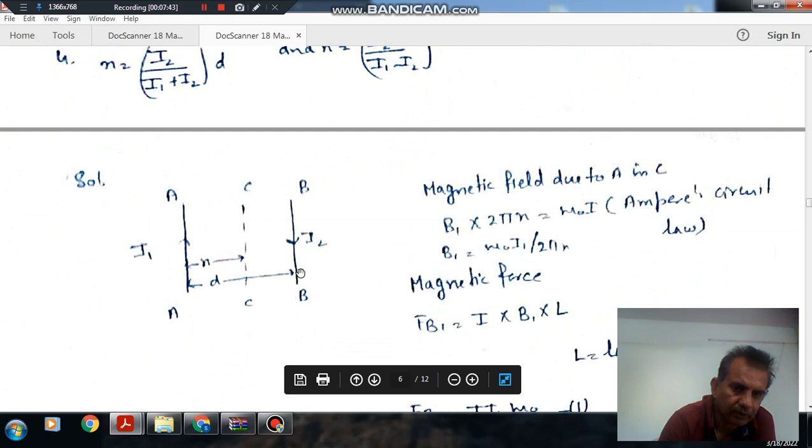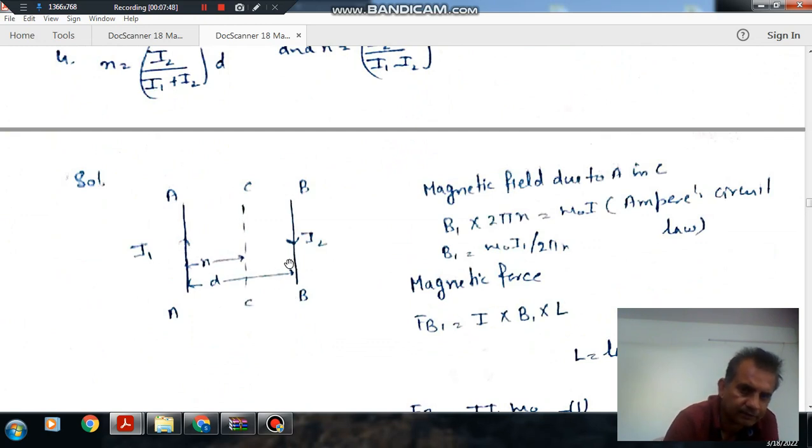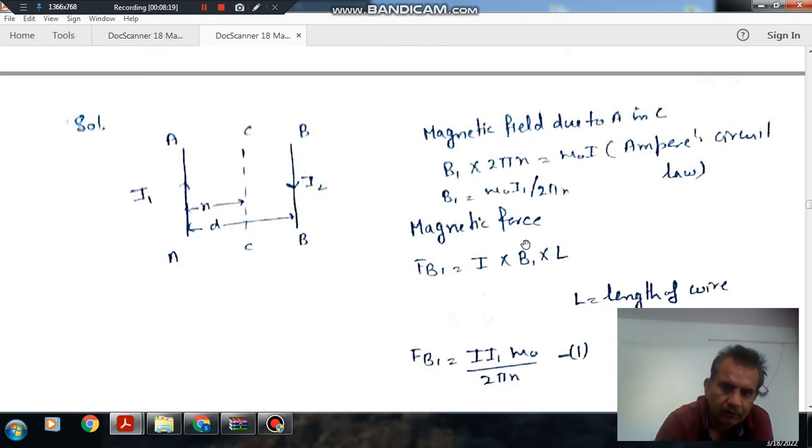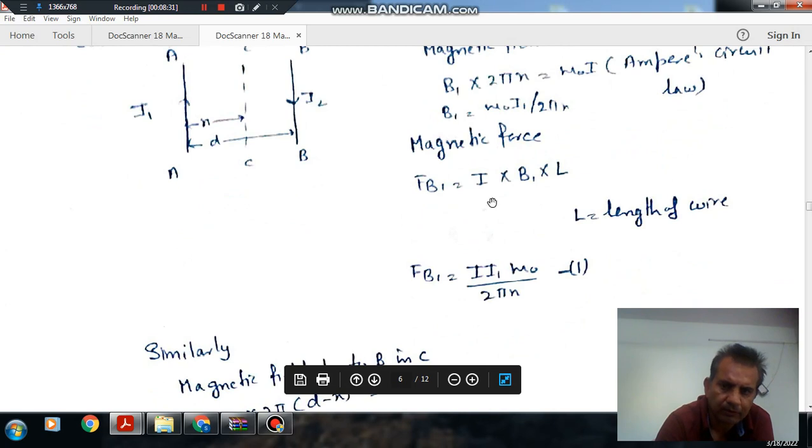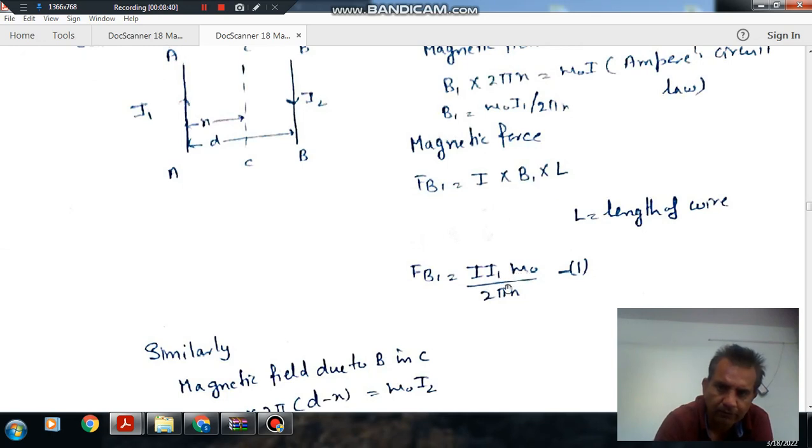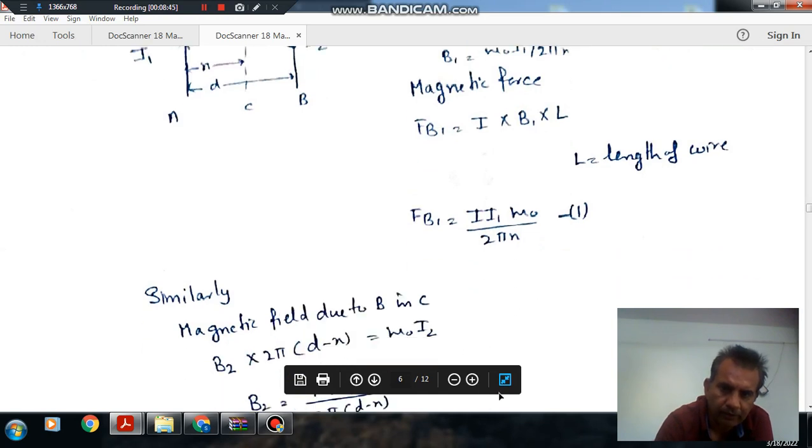These are the two wires, I_1 and I_2, and this is the third wire at a distance X from I_1. The magnetic field at C due to I_1 is given by B_1 = μ_0I_1/(2πX). The magnetic force is F_1 = I×L×B_1. Putting the value of B_1, we get F_1 = μ_0I×I_1×L/(2πX).